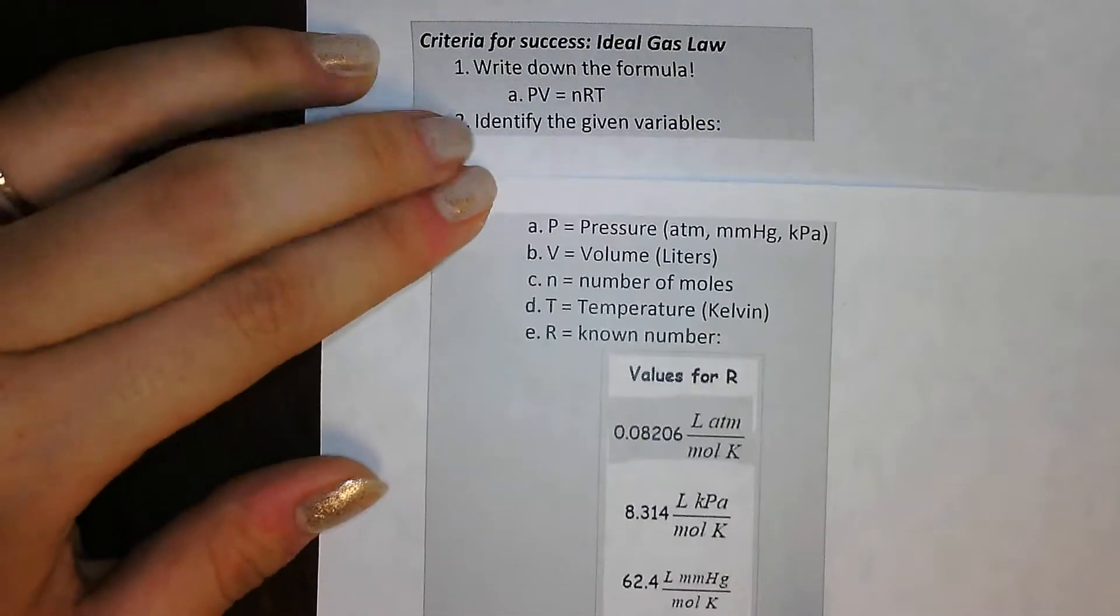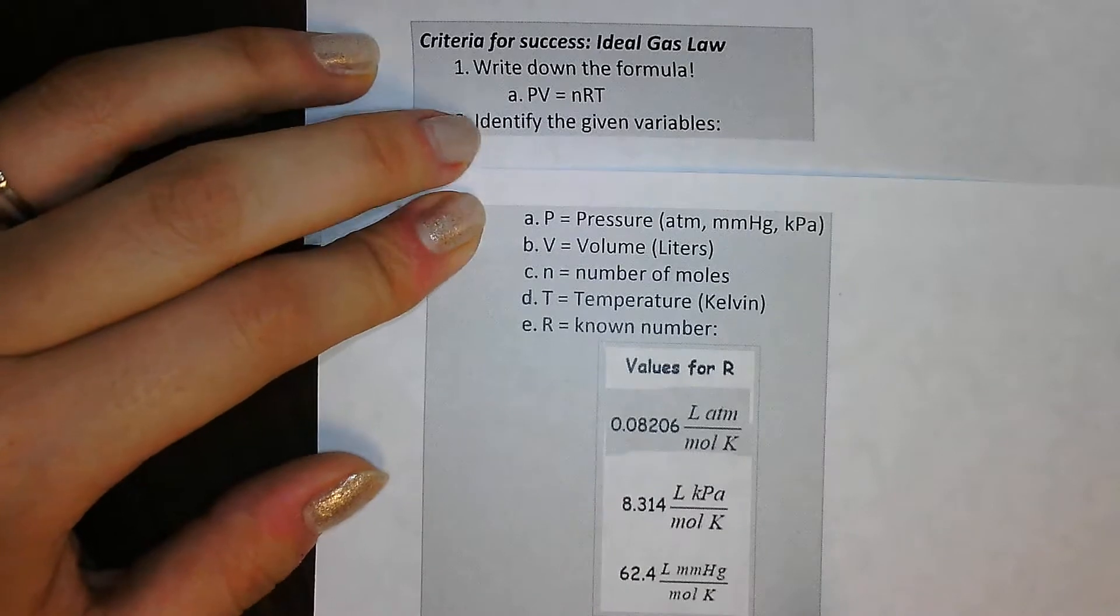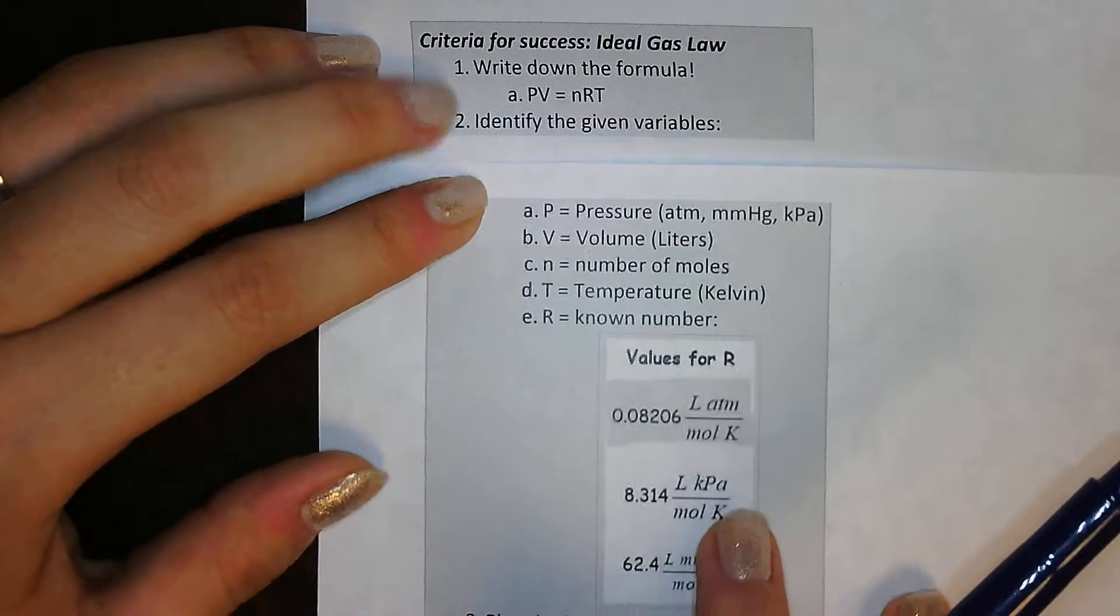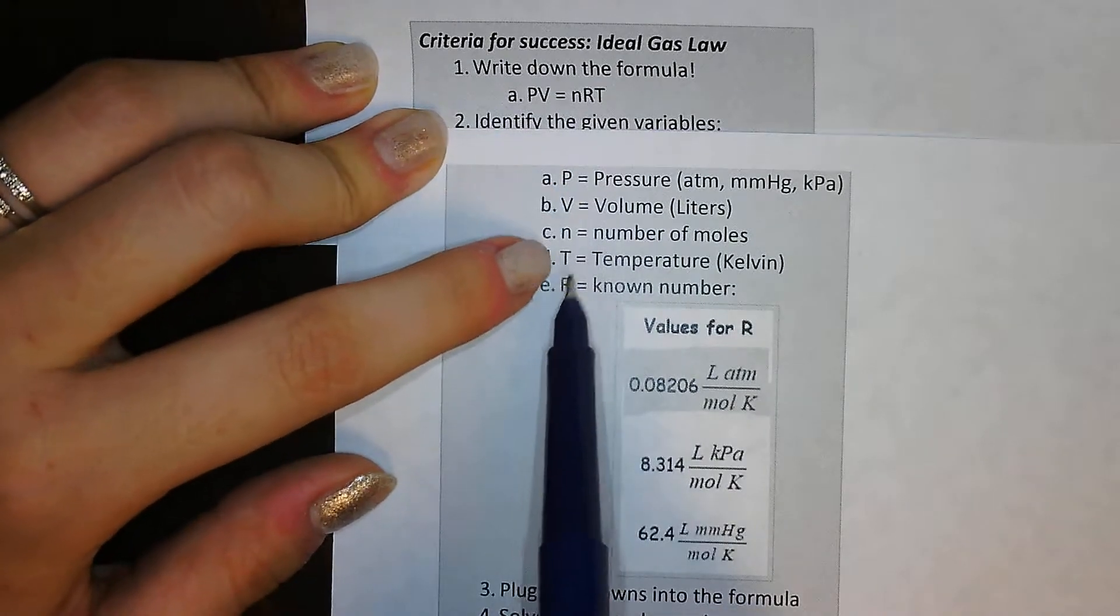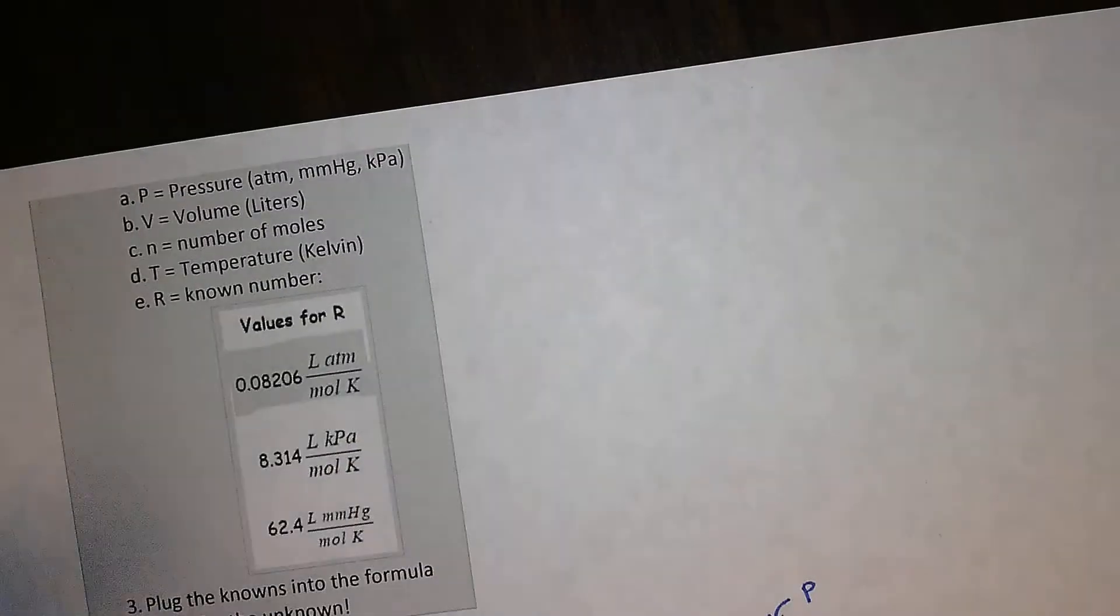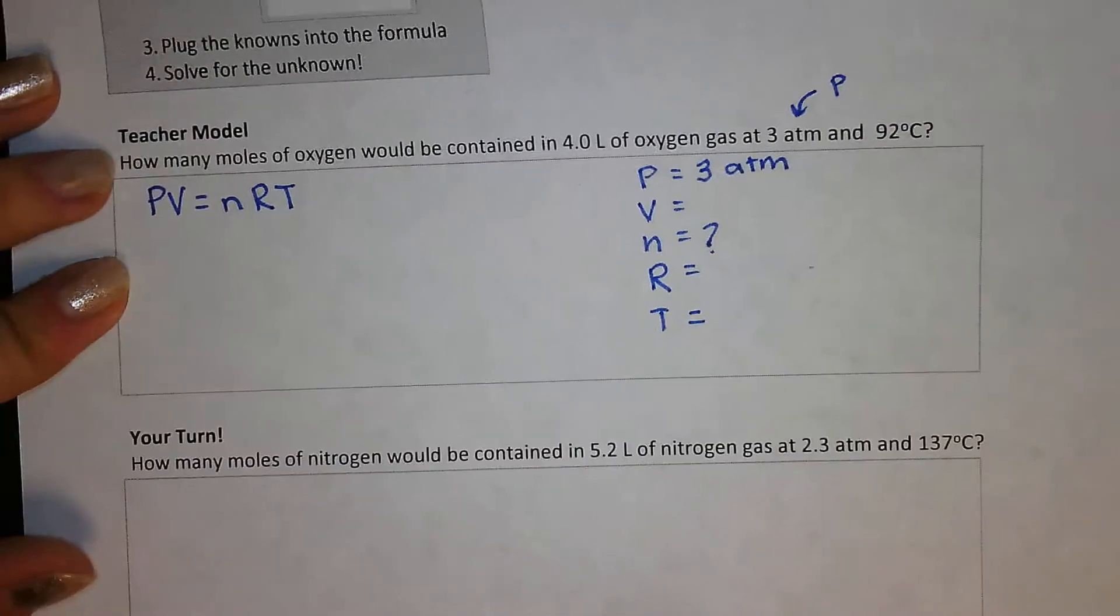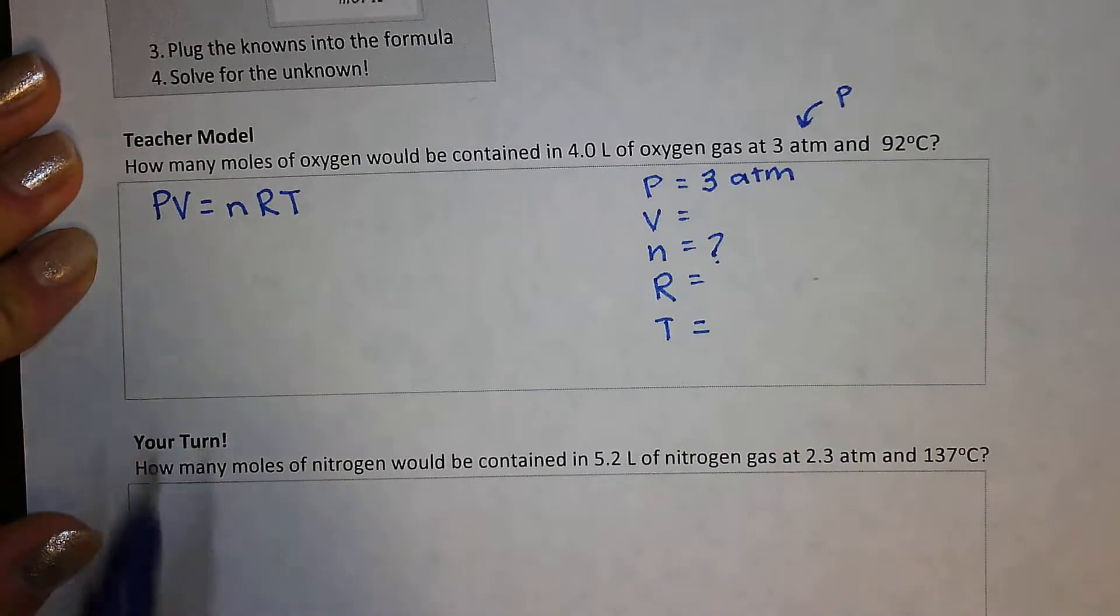Next thing is I have to identify the given variables. So within the problem, I have to go and see which variables they gave me out of my P, V, N, T, and R. So I'm going to go to this problem here and I'm going to read it and identify my variables.